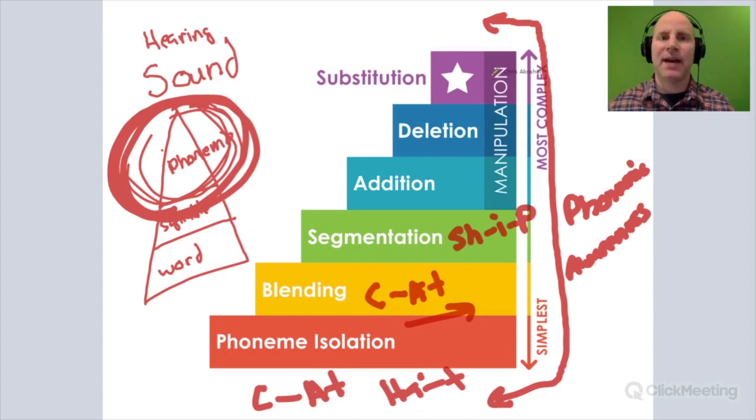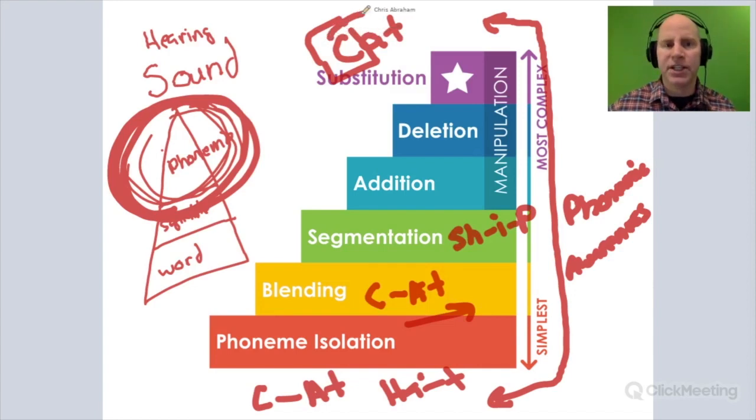When we get to these other sections, they have to do with manipulating the sounds in a word. I'll take a basic one. If a child can hear that the initial sound in cat is /k/ and then substitute or change it to /b/ and get bat, this would be that advanced piece of phonemic awareness. There are a lot of skills that go into phonemic awareness.